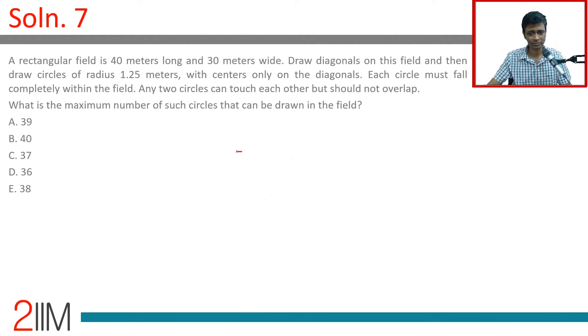Let's worry about one diagonal, diagonal of length 50. 2.5 meters - how many such circles can be placed? This is 2.5. So, 50 by 2.5 is 20. On one diagonal 20 can be placed.